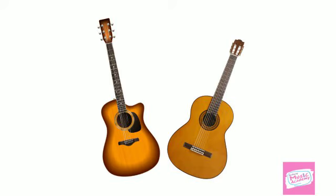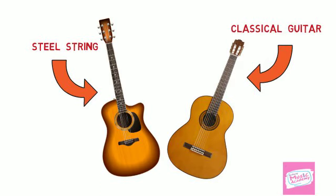These are two acoustic guitars. One is a steel string acoustic, and one is a classical guitar. They contain the same exact parts, they just use different strings from one another.